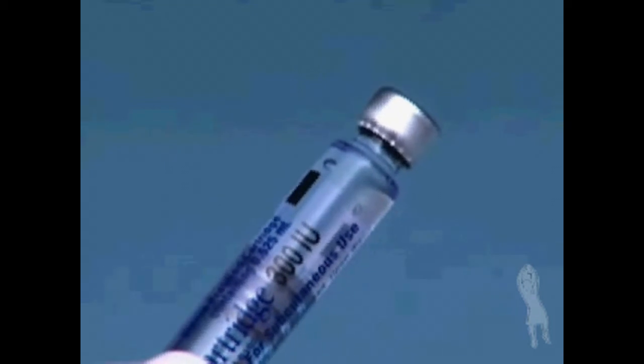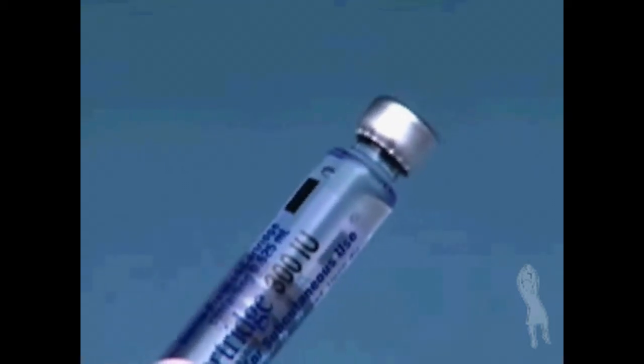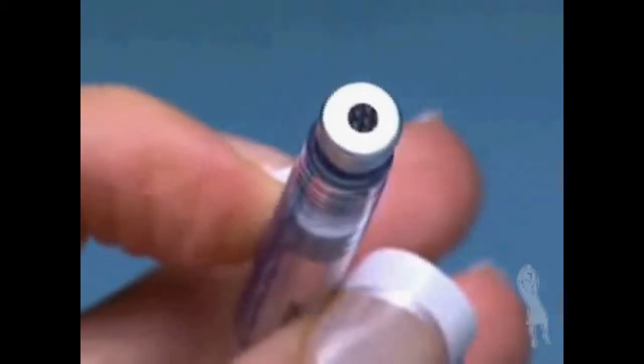Take a Follistim AQ cartridge out of its package. Do not use if it contains particles or is not clear. Clean the rubber stopper on the cartridge with an alcohol wipe.